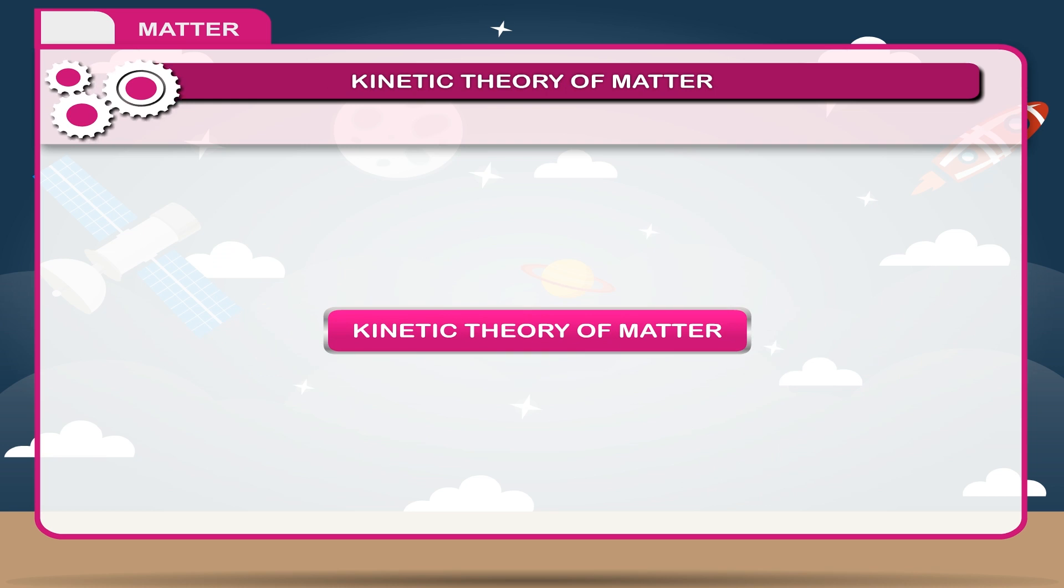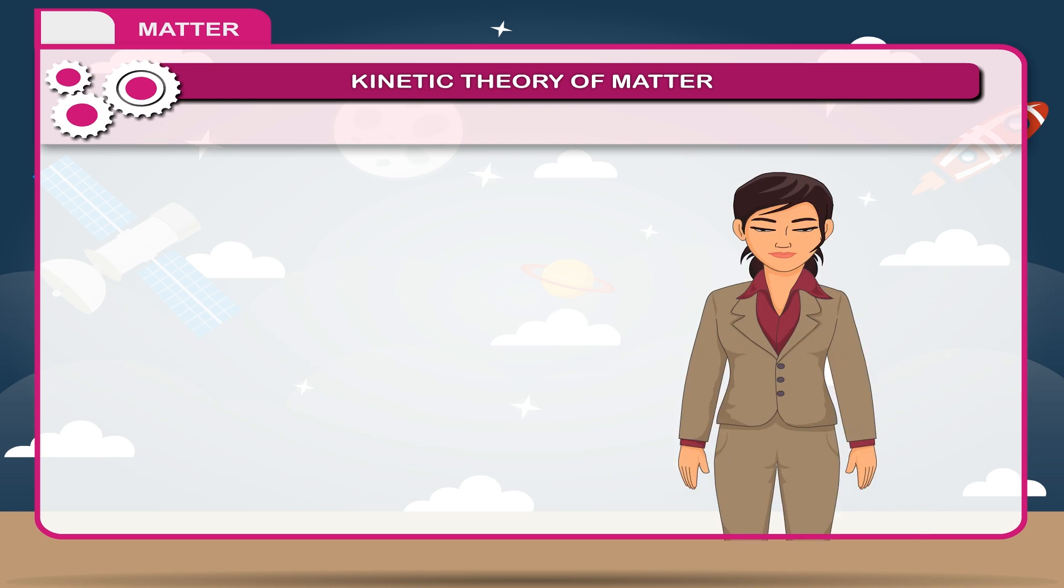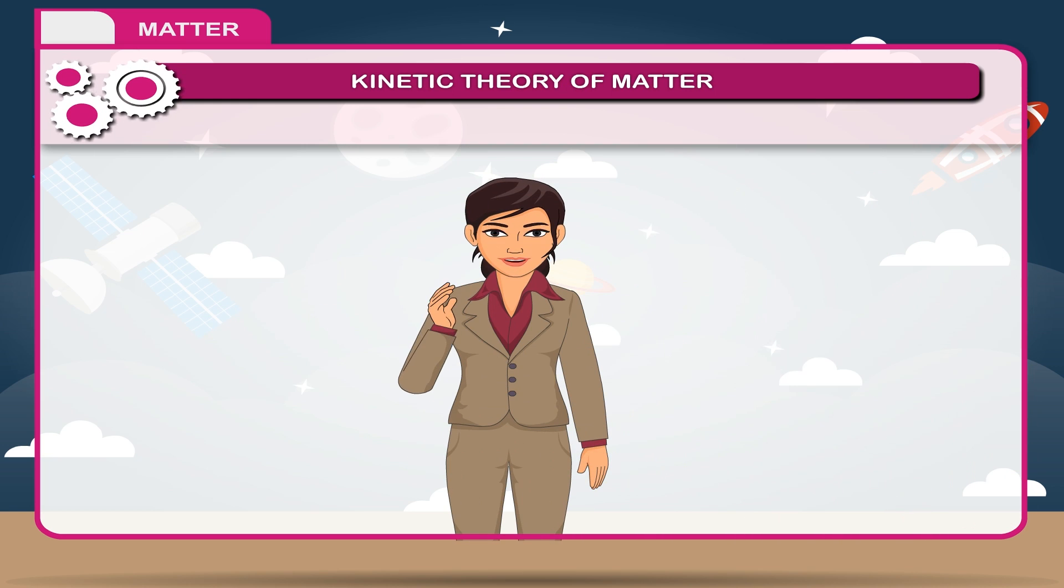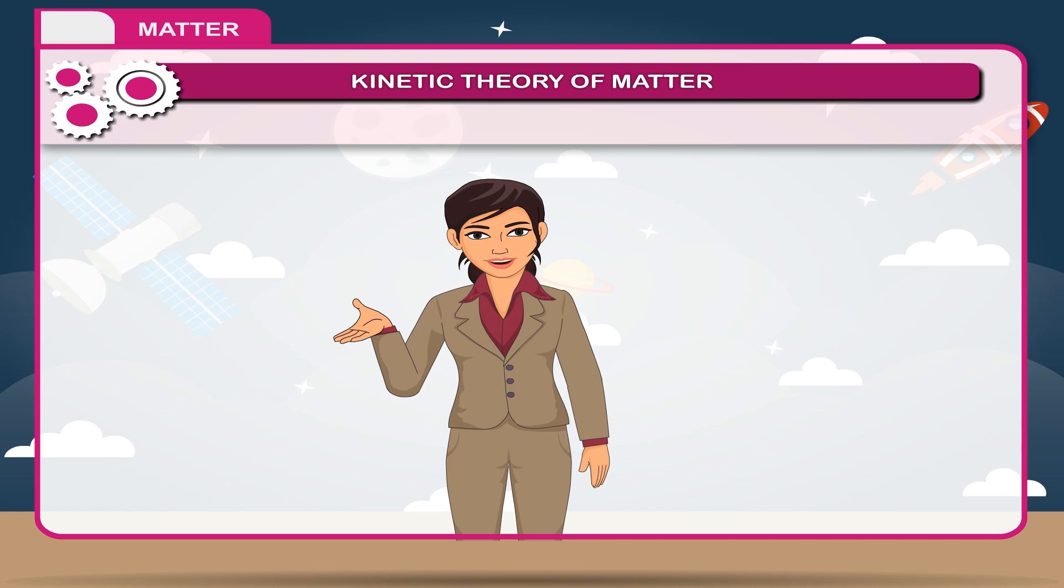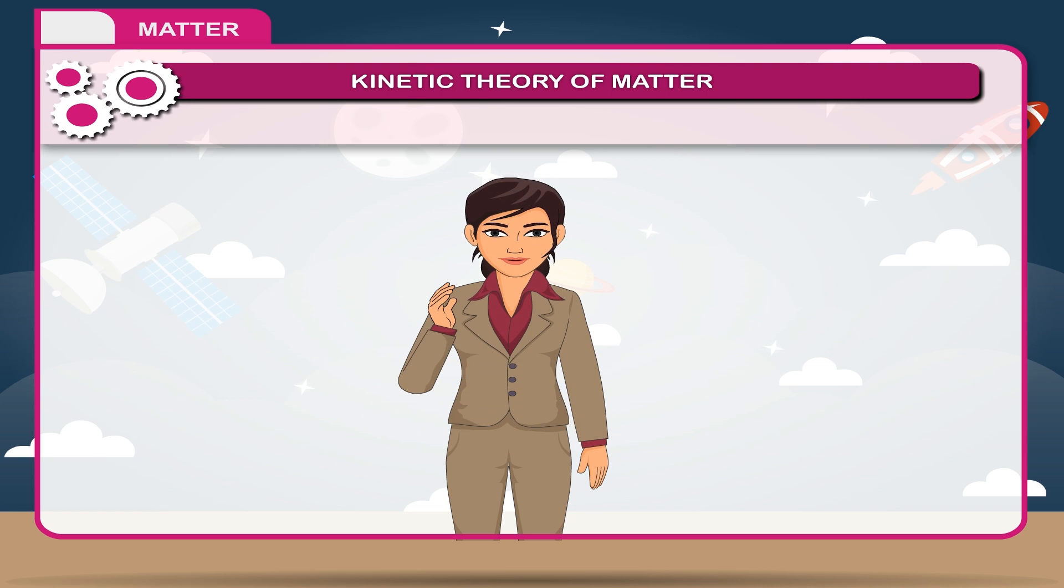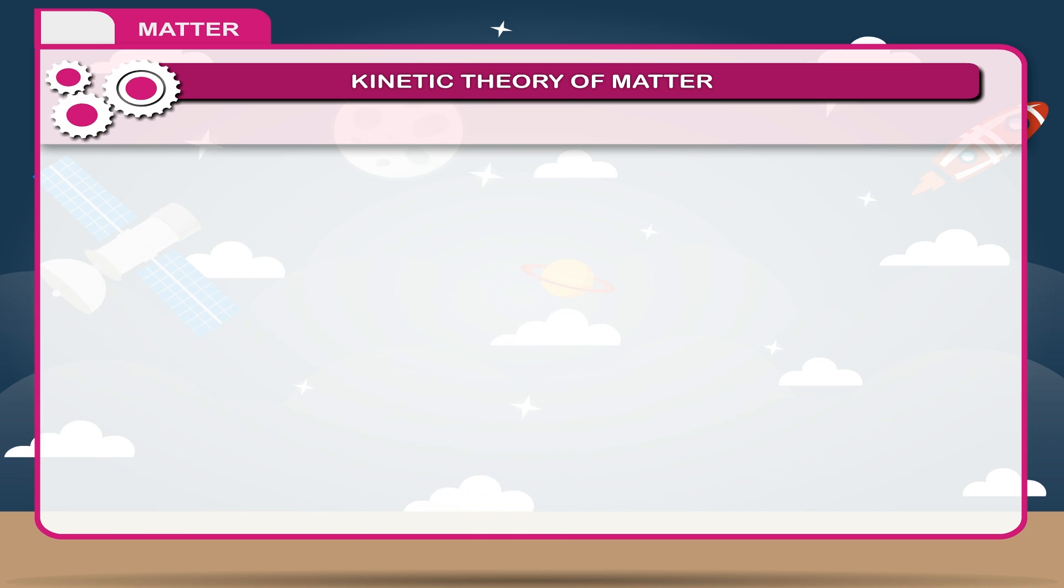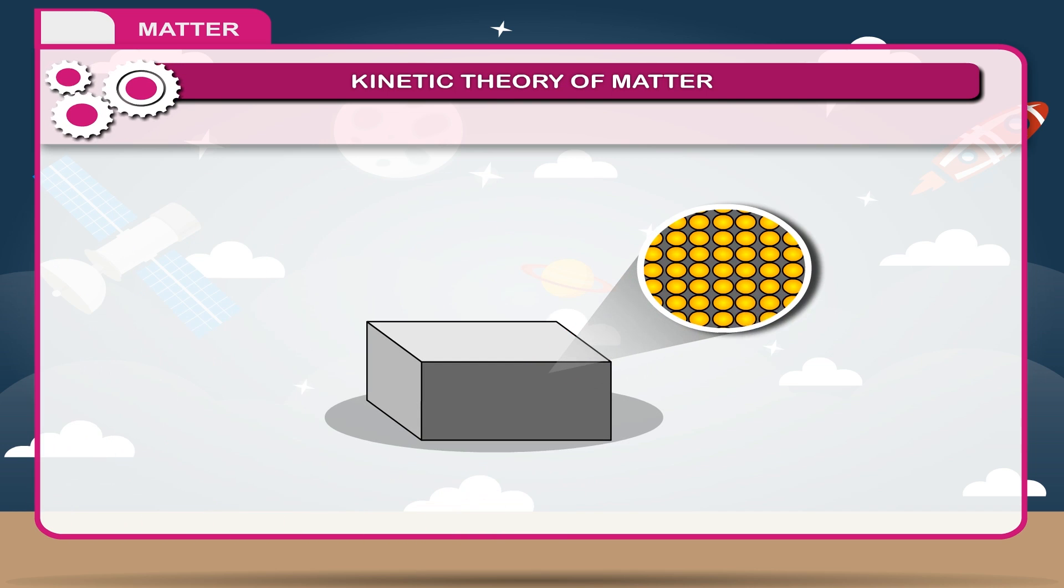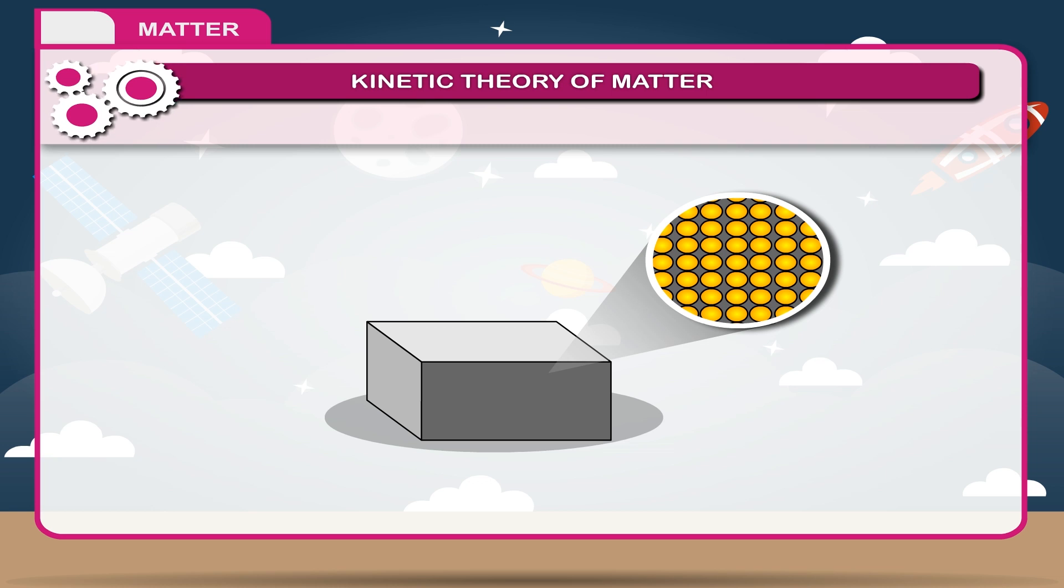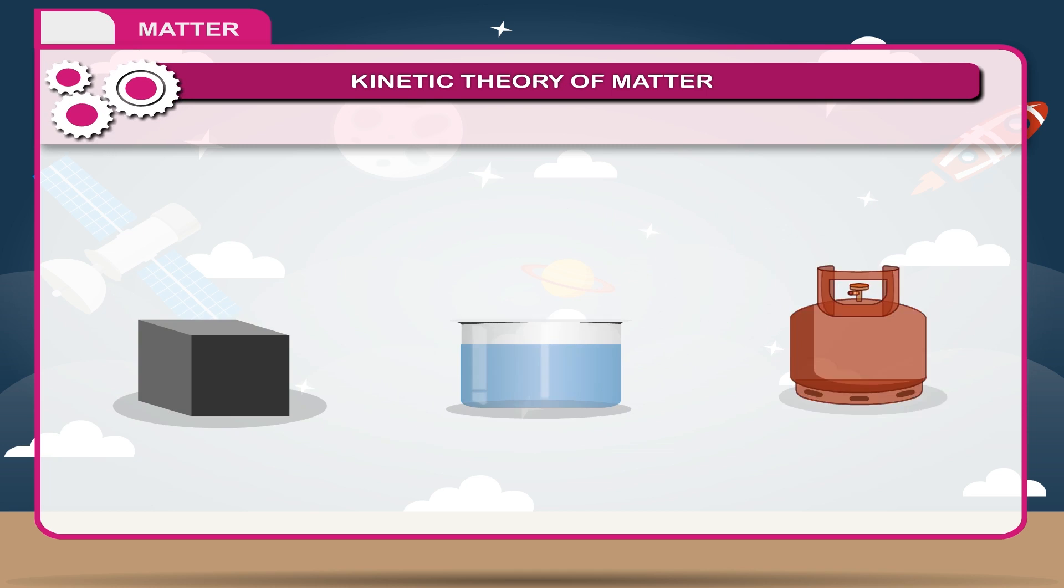Kinetic Theory of Matter. According to the Kinetic Theory of Matter, the main postulates regarding the motion of the particles in matter are as follows. 1. Every matter is made up of very tiny particles called molecules. Molecules of a particular substance are alike while molecules of different substances are different.